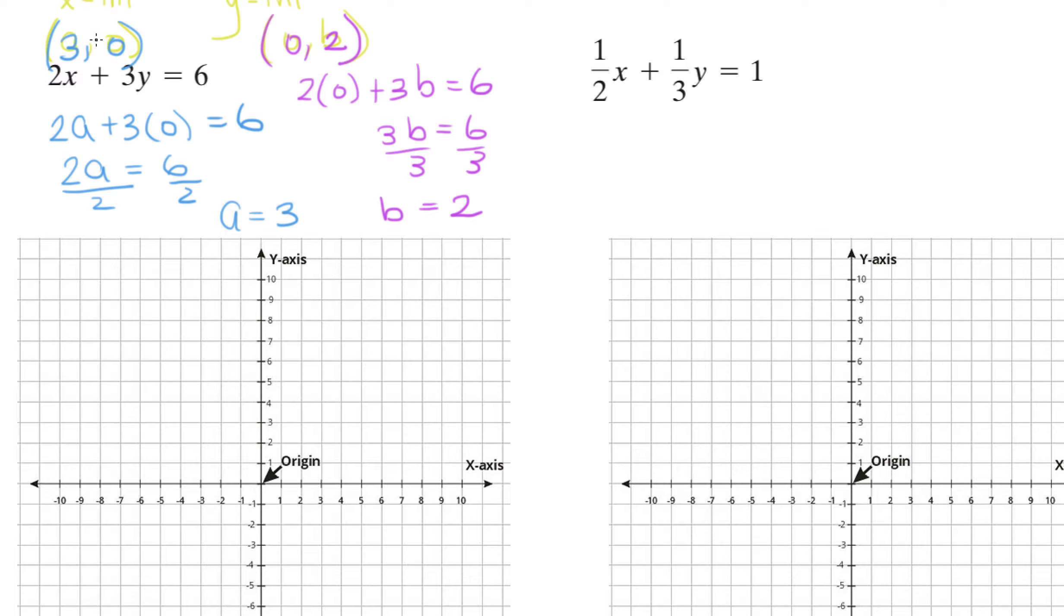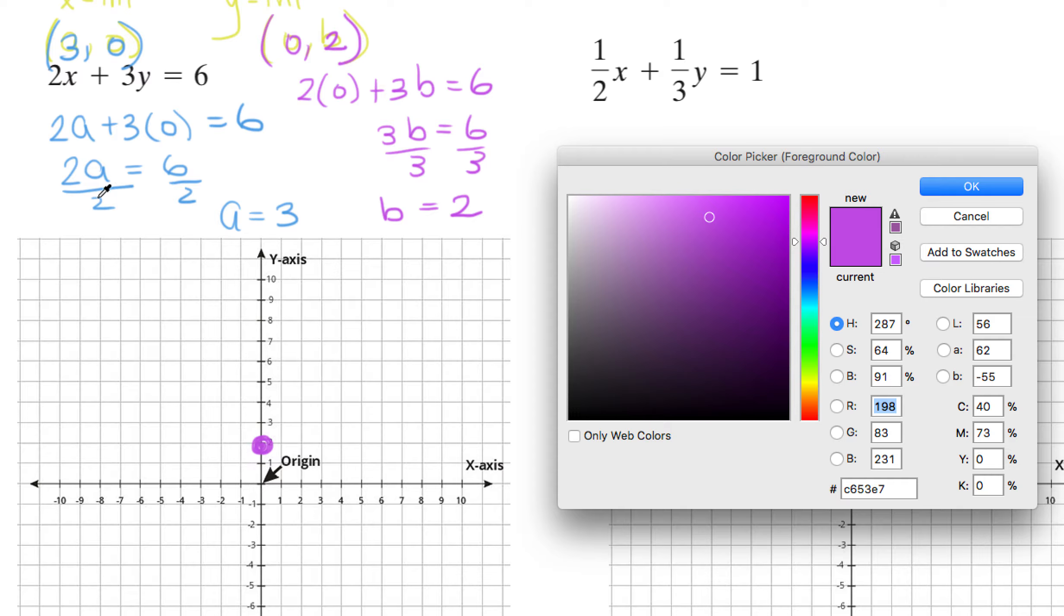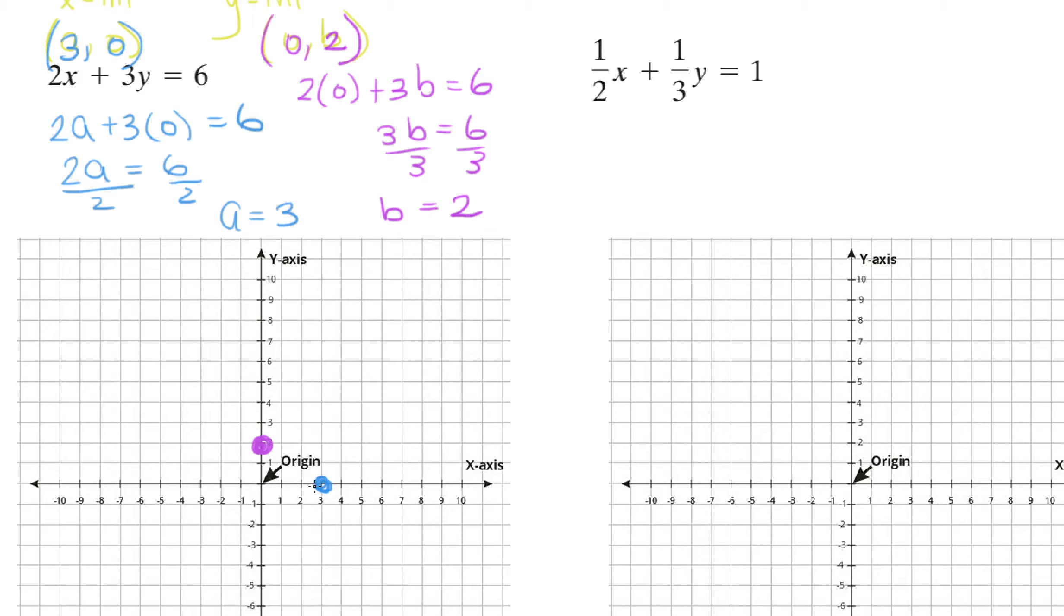And for graphing the equation, the only thing you need to do is plot these two points onto your graph. So (3, 0) is this point. Let's use the same colors as before. (0, 2) is this point. And then the x-intercept (3, 0) is this point. Now we trace the line that connects those two points, so that's your line.